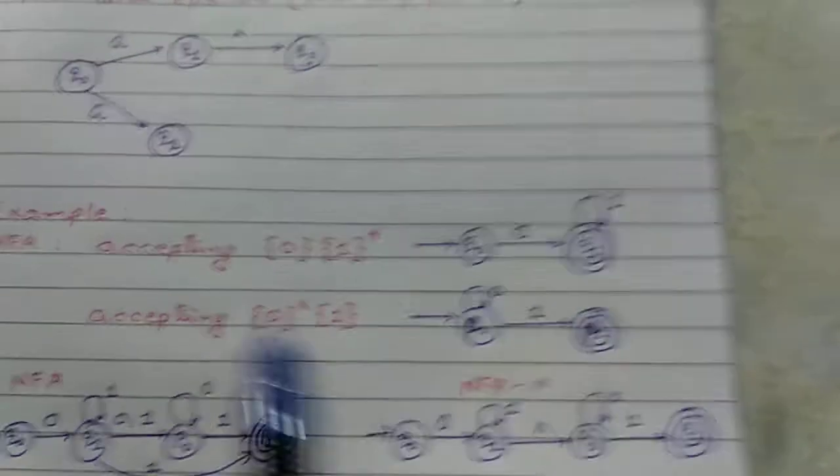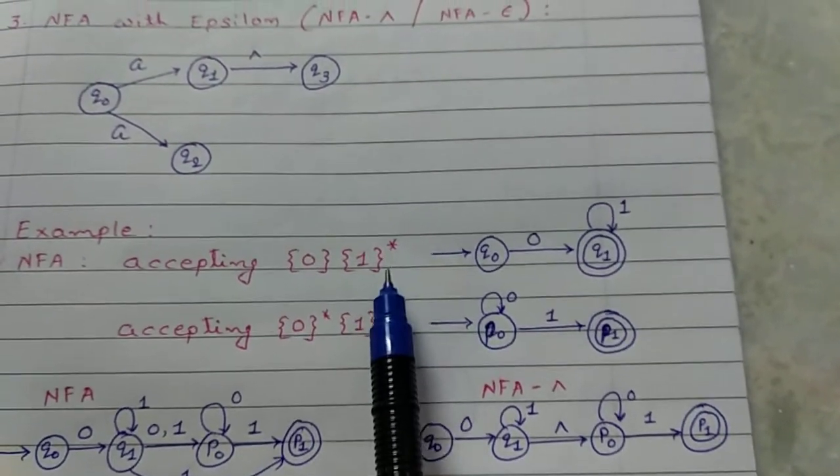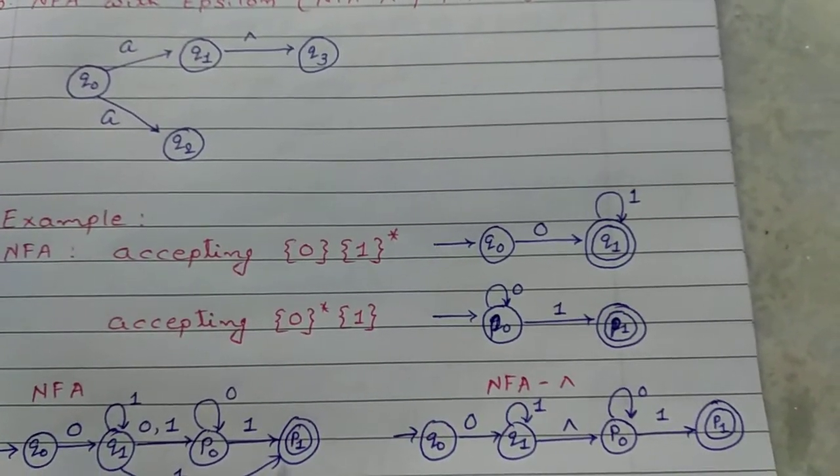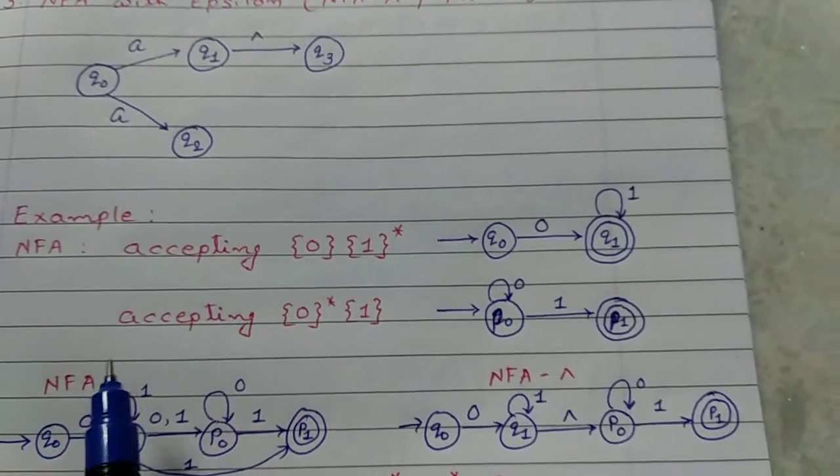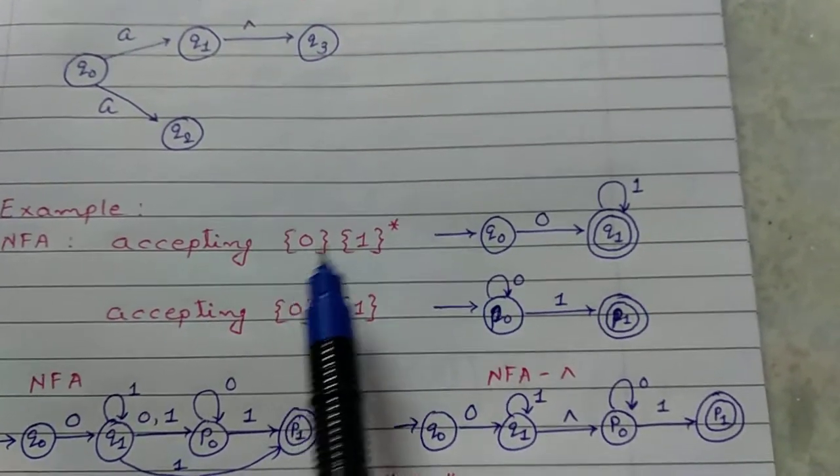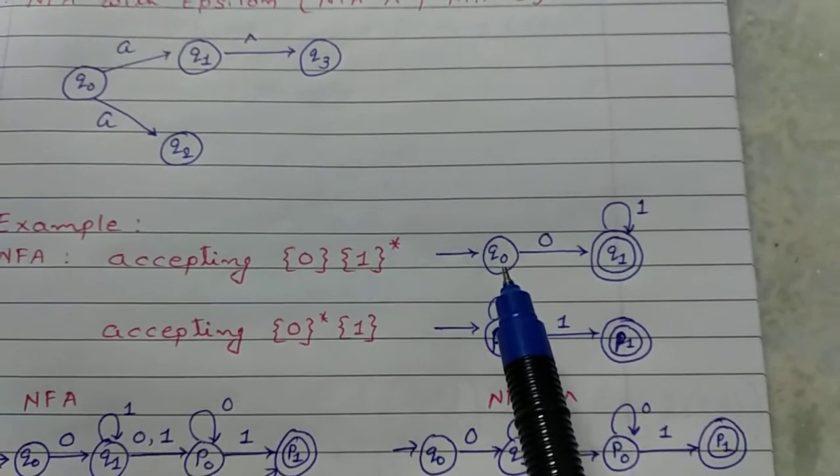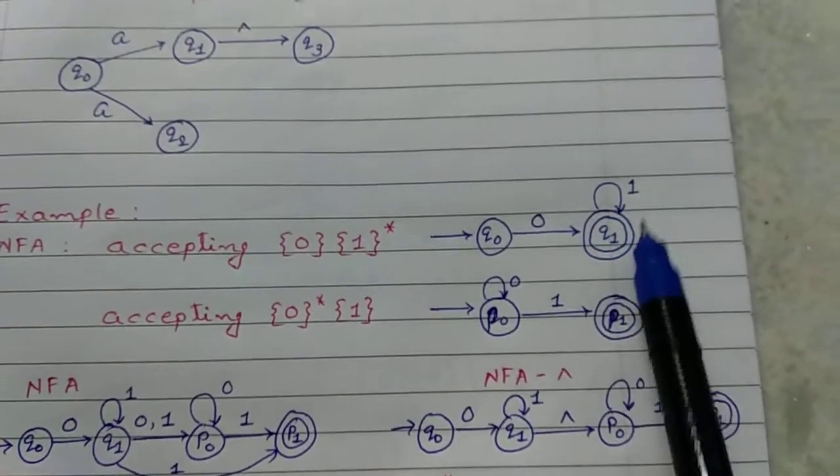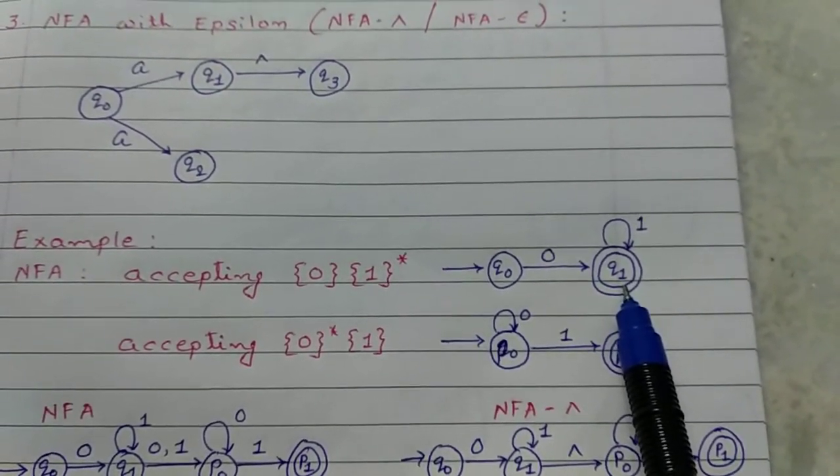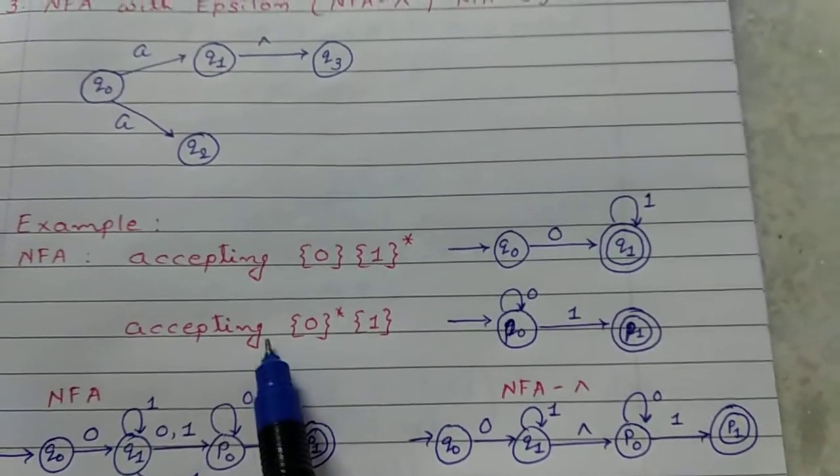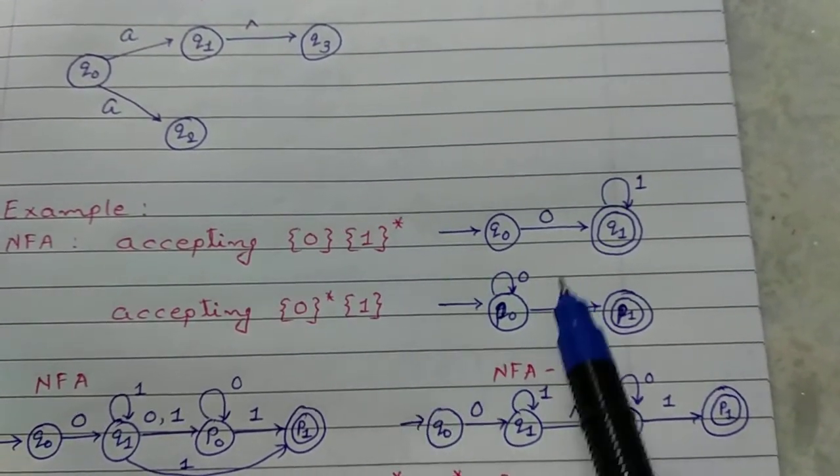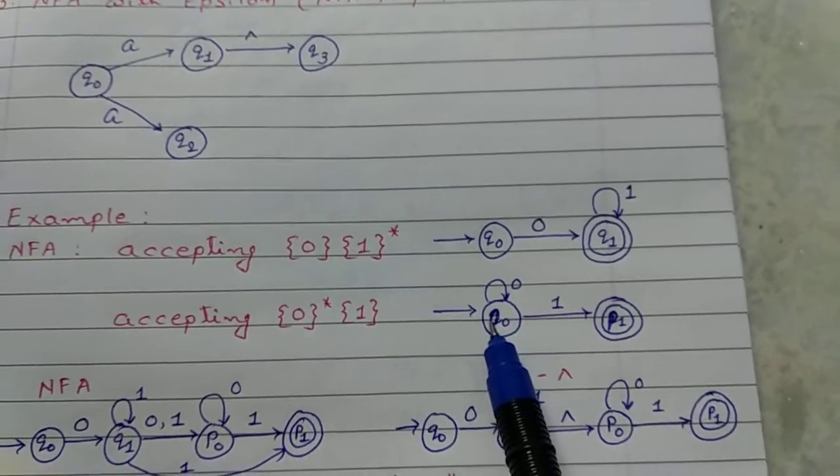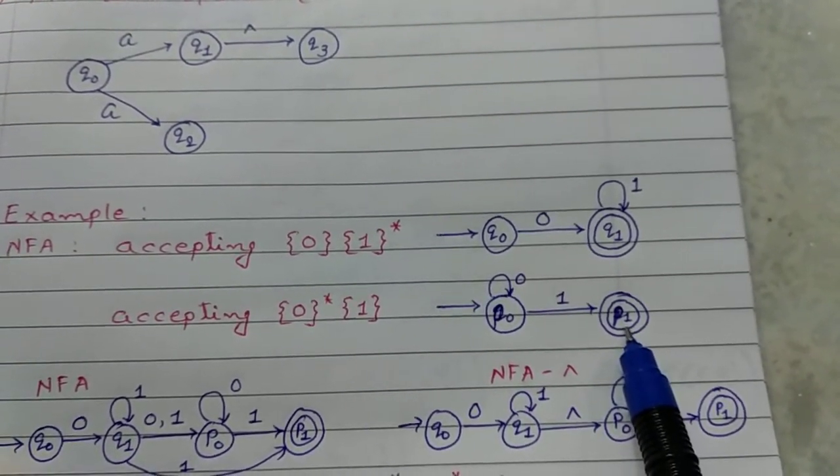For example, for accepting 0,1 star, draw the NFA. You already know how to draw DFA for given string. Here, I draw NFA for this string 0,1 star. Starting initial state Q0, 0 and 1 star. 0 or more occurrences of 1. So, this one is a final state. An NFA accepting 0,1 star has a self loop of 1. P0 is an initial state and P1 is a final state.